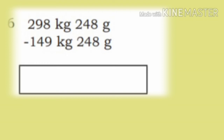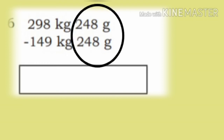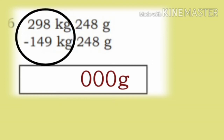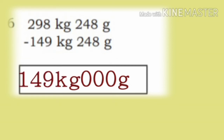Sixth problem: 298 kg 248 g minus 149 kg 248 g. First subtract grams: 248 minus 248 equals 0 grams. Now subtract kilograms: 298 minus 149 equals 149 kg. So the answer is 149 kg 0 grams.